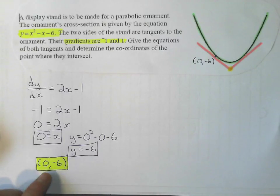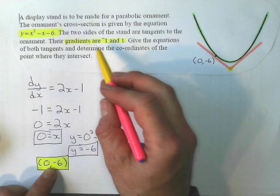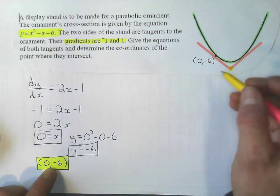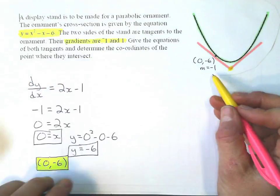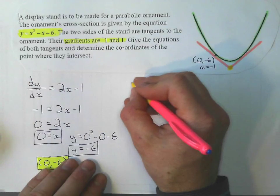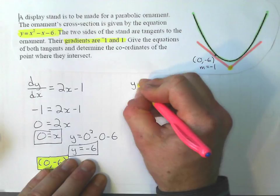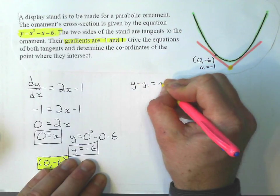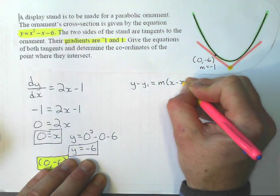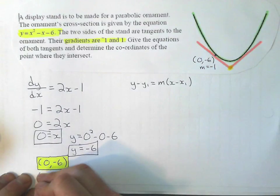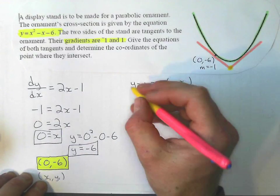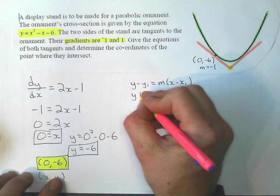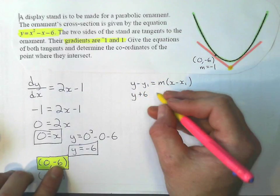Okay, and now I can find the equation of this line because I have a point and I have the gradient. The gradient is negative 1. So I use my point-gradient formula, y - y₁ = m(x - x₁) and substitute those values in. Remember that's x₁, y₁. So I've got y + 6 (minus a negative 6 is plus 6). My gradient is negative 1 and just x - 0.